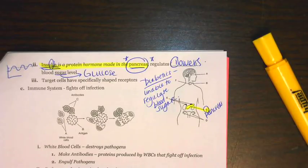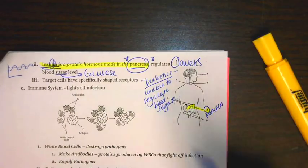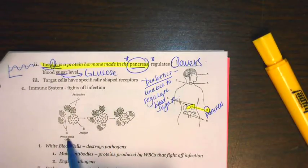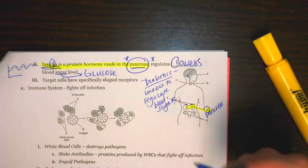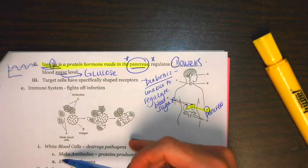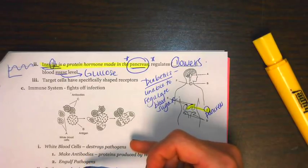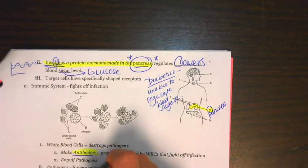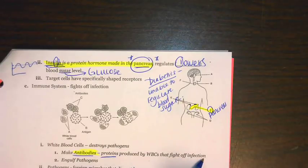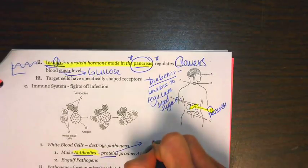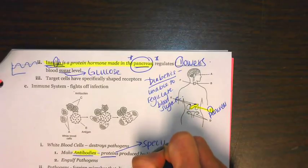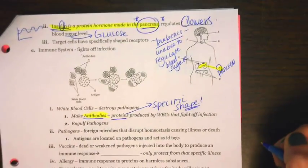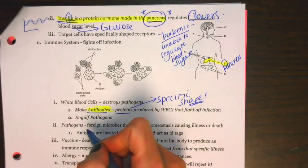Next up we have the immune system. When we're talking about the immune system, it fights off infection. This picture is a very common picture on the Regents. White blood cells — they make antibodies. Antibodies are going to be a specific type of protein produced by white blood cells that fight off infection. Since they are proteins, they have a specific shape, and remember, specific shape is going to dictate function. The other thing they can do is engulf pathogens.